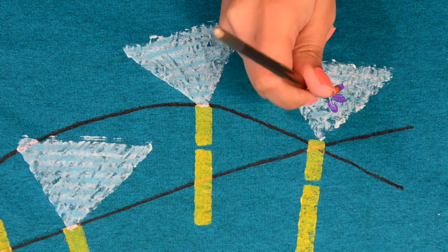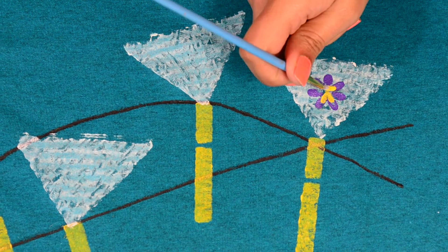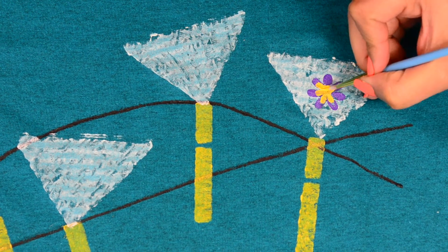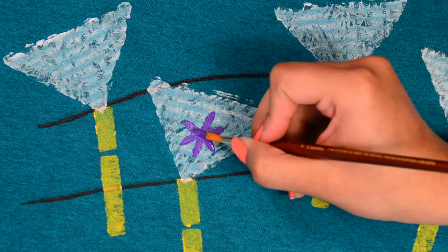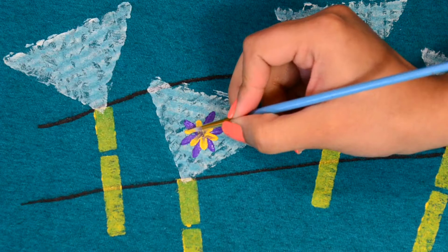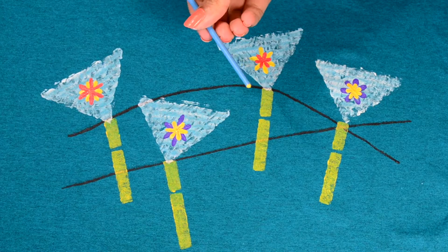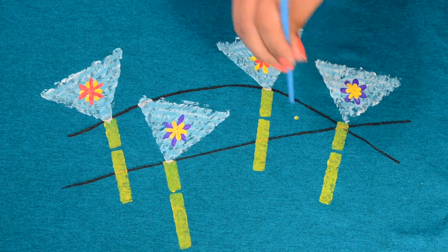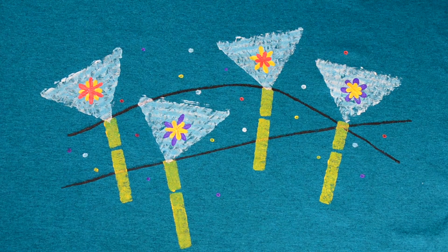Now, in this triangles, I am making flowers but you can make any design or pattern you want. For making this t-shirt more colourful, using the back side of the brush I am making some polka dots on it.